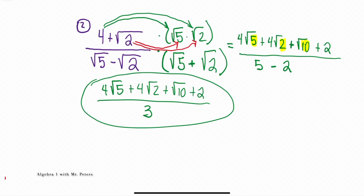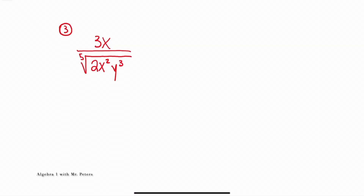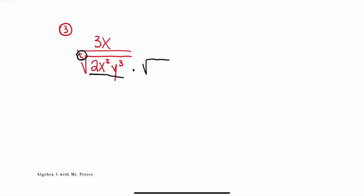Our last example is the type of problem you'll see on standardized tests like the SAT, EOC, or FSA exams. This is challenging because students forget that to simplify we have to be able to take the fifth root of whatever is under the radical. So unlike a square root, I'm not just going to multiply by the same exact expression. Since I'm trying to take the fifth root of 2, I'm going to have to multiply by 2 to the 4th.